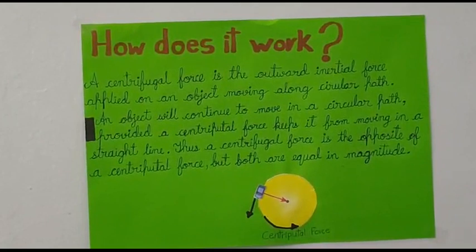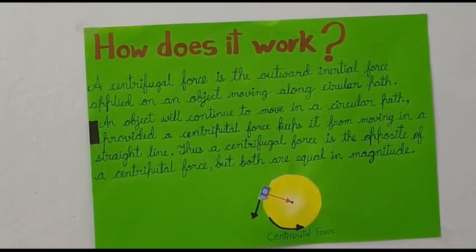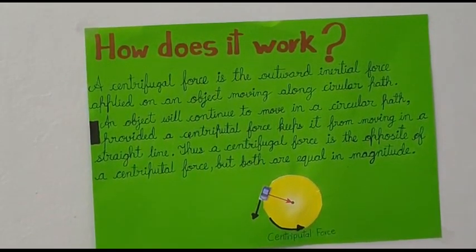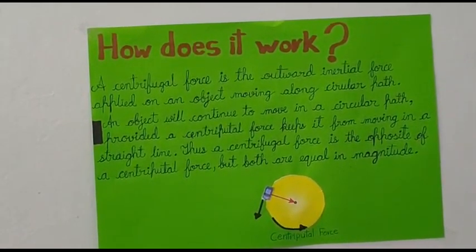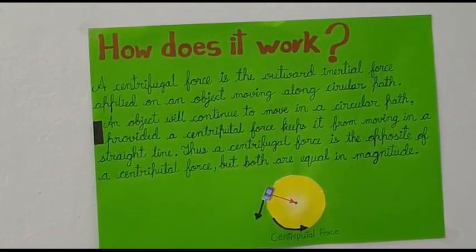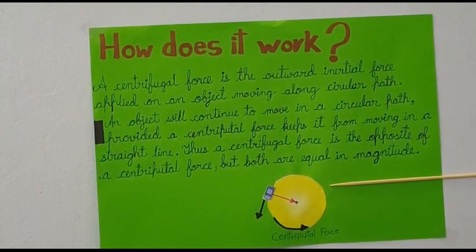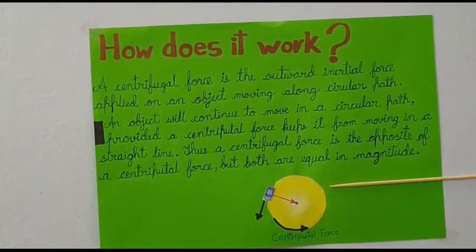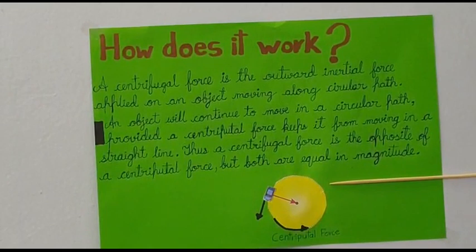Now let us understand how it works. A centrifugal force is the outward inertial force applied on an object moving along a circular or curved path. An object will continue to move in a circular or curved path provided a centripetal force keeps it from moving in a straight line. Thus, a centrifugal force is the opposite of a centripetal force, but both are equal in magnitude. As you can see in the diagram given below, as the car moves in a circular path, the inertia slightly forces it to move in a straight line, but because of the centripetal force, it remains going in a circular path.